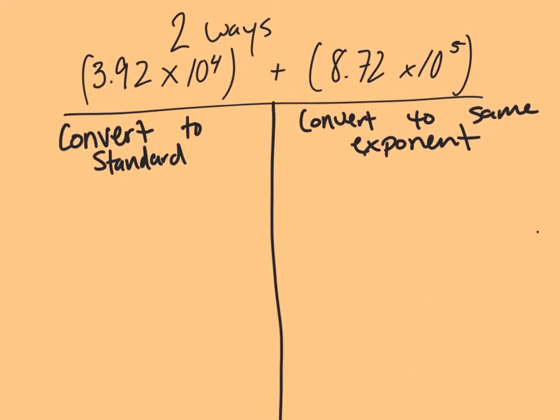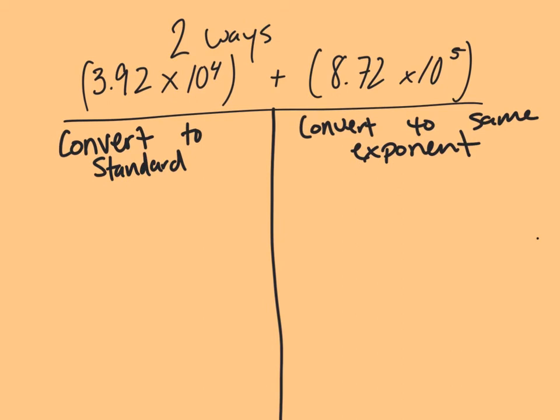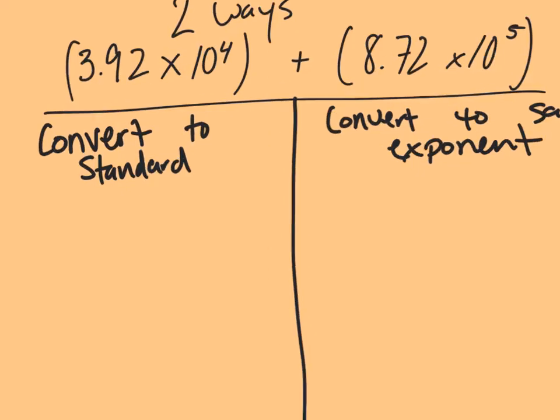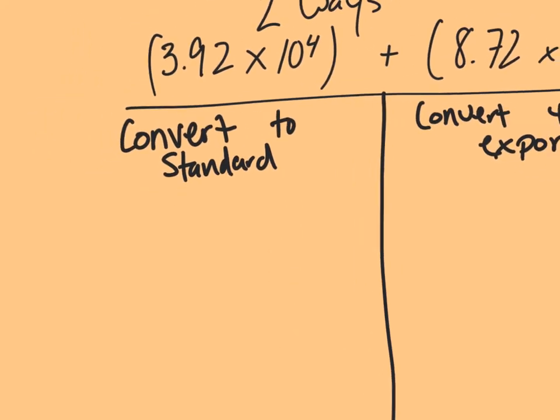Two ways to add these together: you can either convert both of them to standard notation and then add them together like you would a gigantic addition problem, or you can convert them to the same exponent and then add together, because then you're moving the same place value anyway. So I'm going to start with the standard notation version because that's kind of what I started at the beginning.